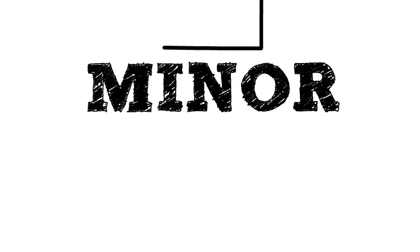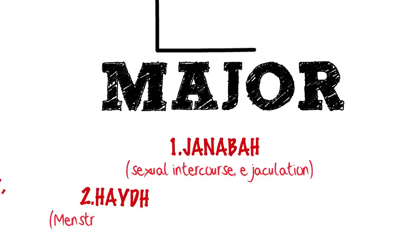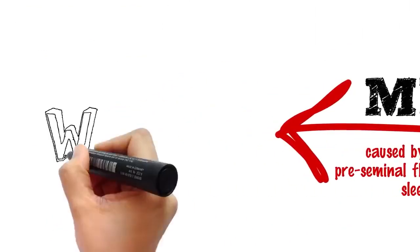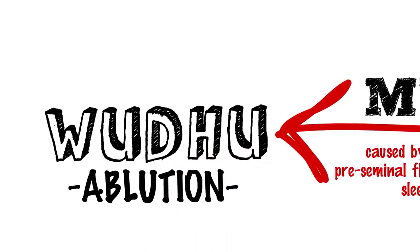There are two kinds of ritual impurities: the minor impurity and the major impurity, which occurs as a result of janabah, hayd, or nifas. To achieve tahara from the minor impurity, you only need to renew your wudhu ablution, whereas in the case of major impurity, you need to take a ghusl.